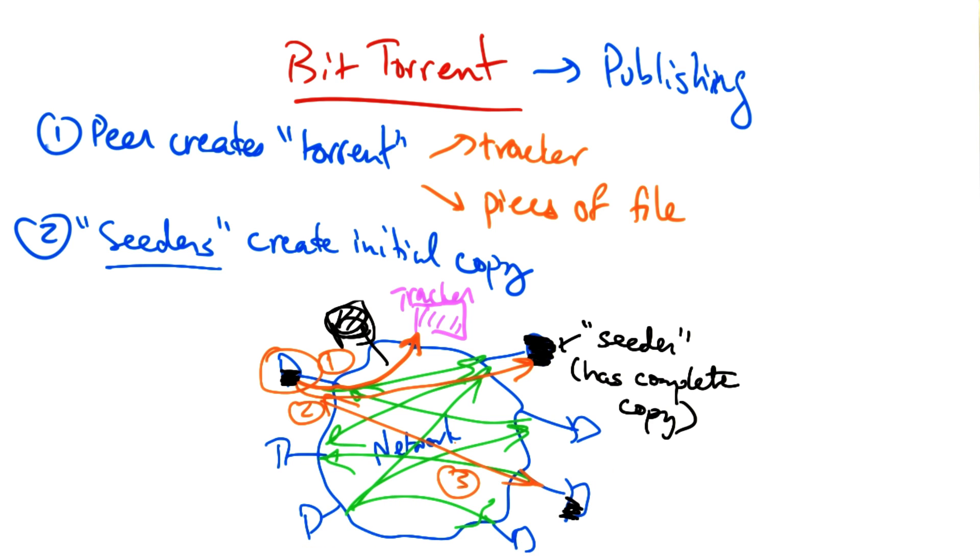At this point, clients can begin to swap chunks. As clients begin swapping distinct chunks with one another, the idea is that eventually, after enough swapping, everyone gets a copy of the complete file.